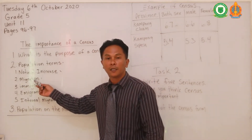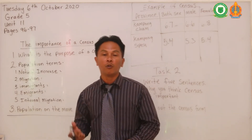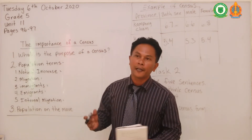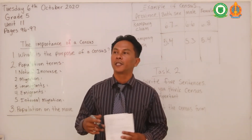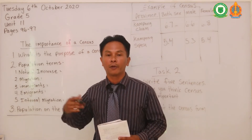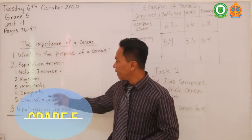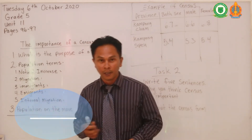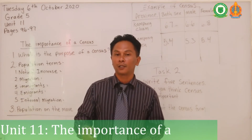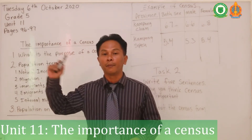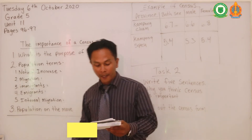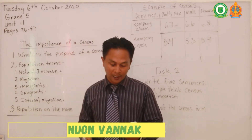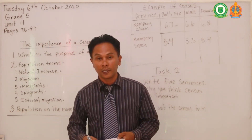Number two, migration: migration is a permanent movement from one country to another. For example, someone from Cambodia moving to France — that's called migration. Number three, immigrants: immigrants are people who have entered a country. So the Cambodian person who moved to France is called an immigrant in France.